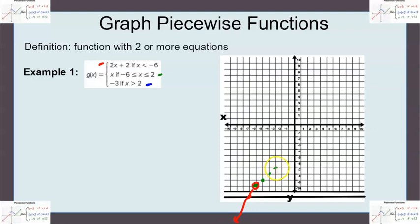Up 1 over 1. And I'm going to keep going until I get to a positive 2. Up 1 over 1. So then I'm going to draw my line here.